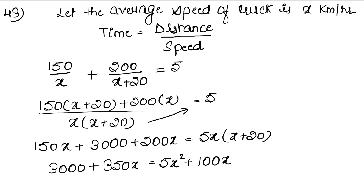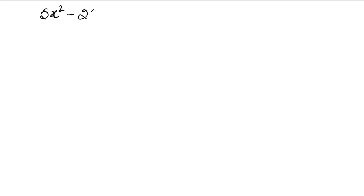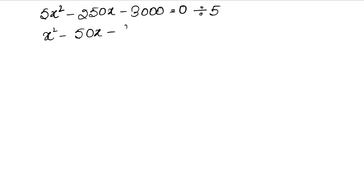So we have 350x + 3000 equals 5x squared + 100x. Moving everything to the right side: 0 equals 5x squared + 100x minus 350x minus 3000, which simplifies to 5x squared minus 250x minus 3000 equals 0. Dividing the whole equation by 5 gives x squared minus 50x minus 600 equals 0.